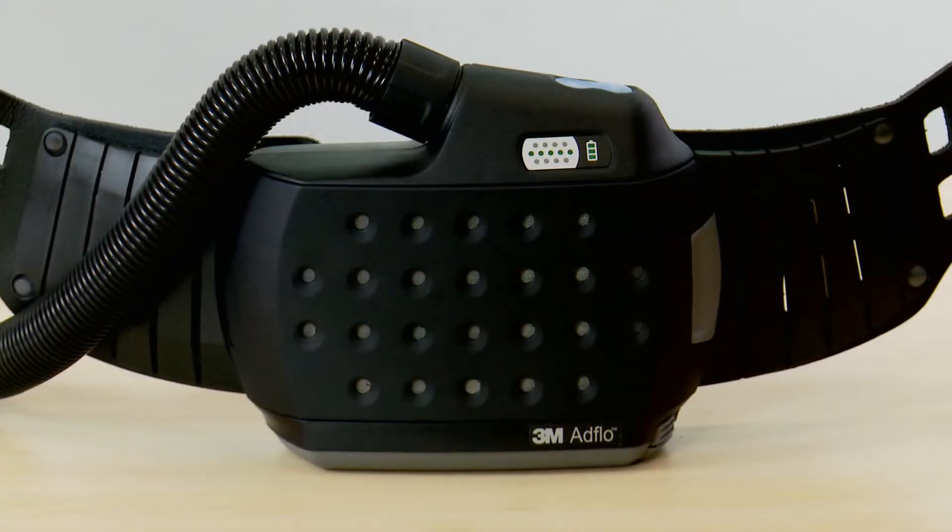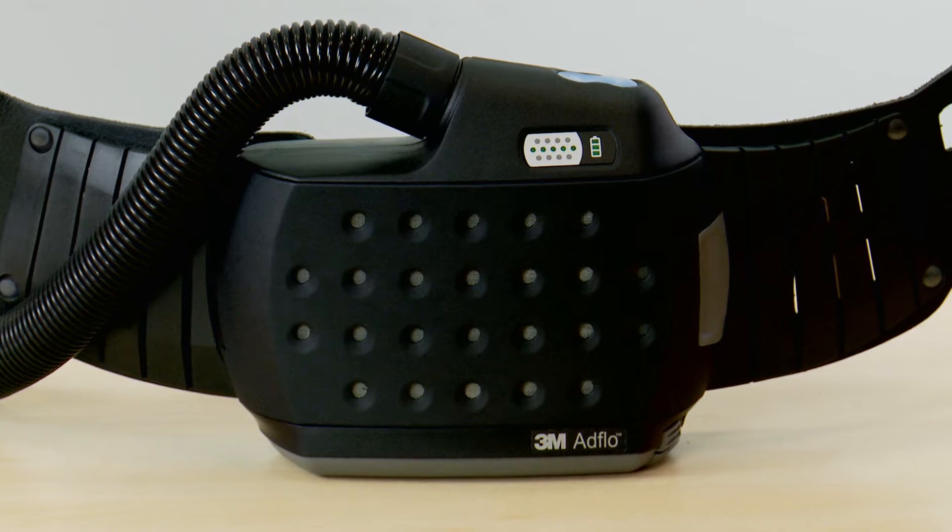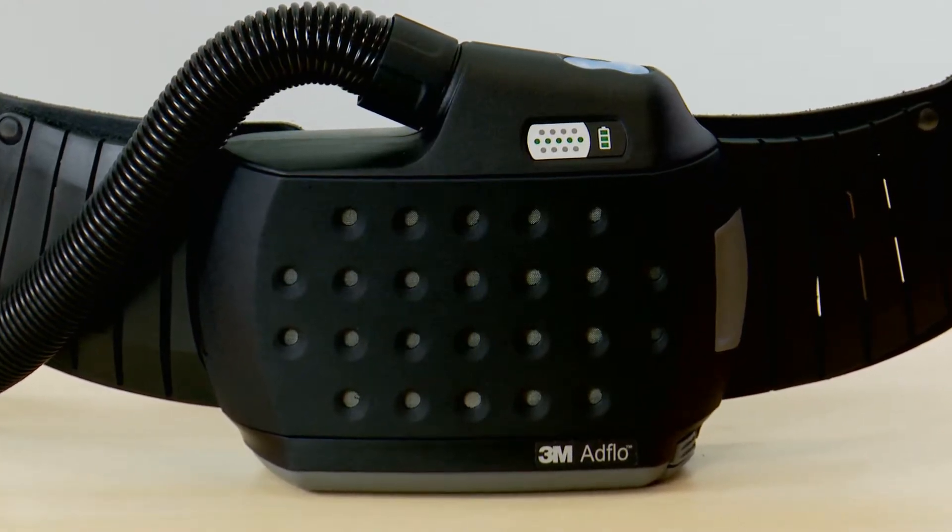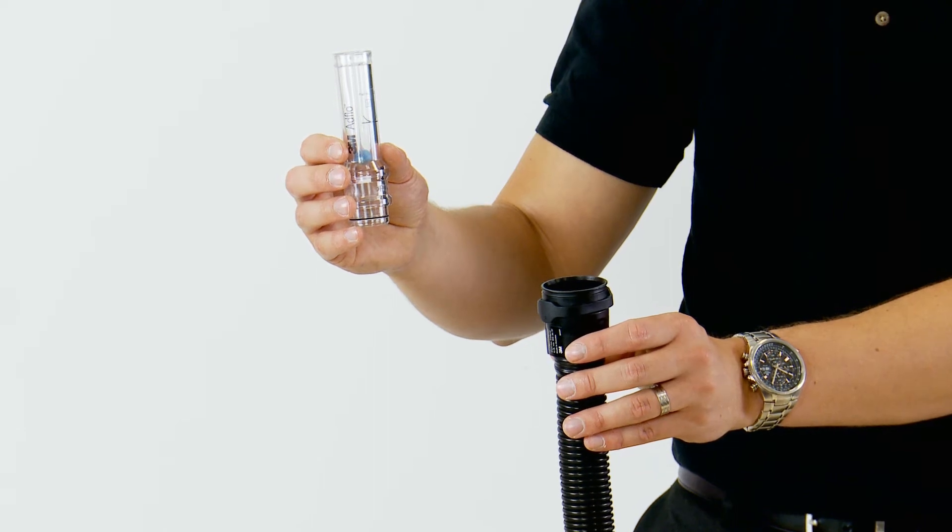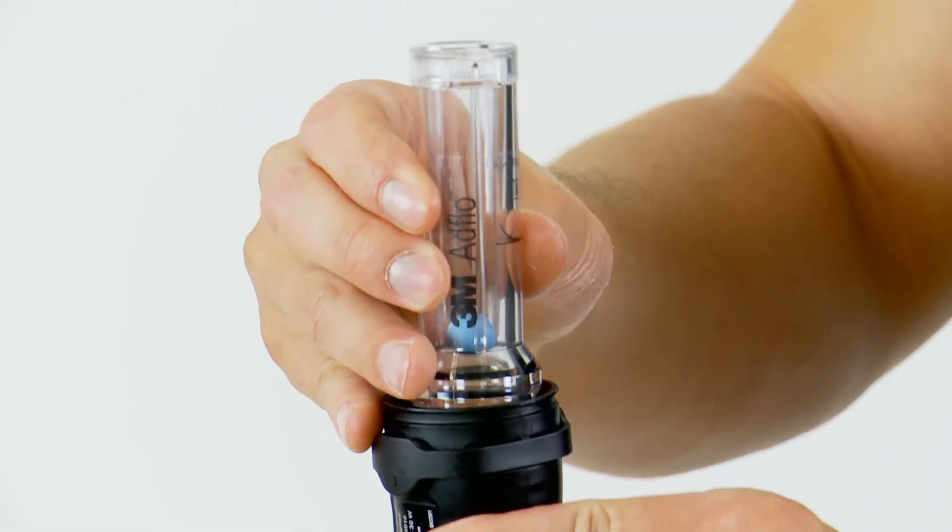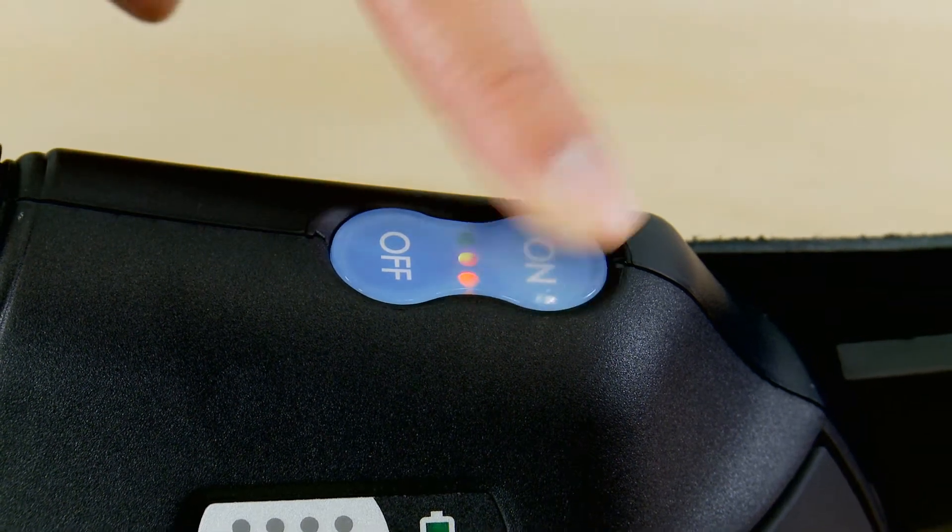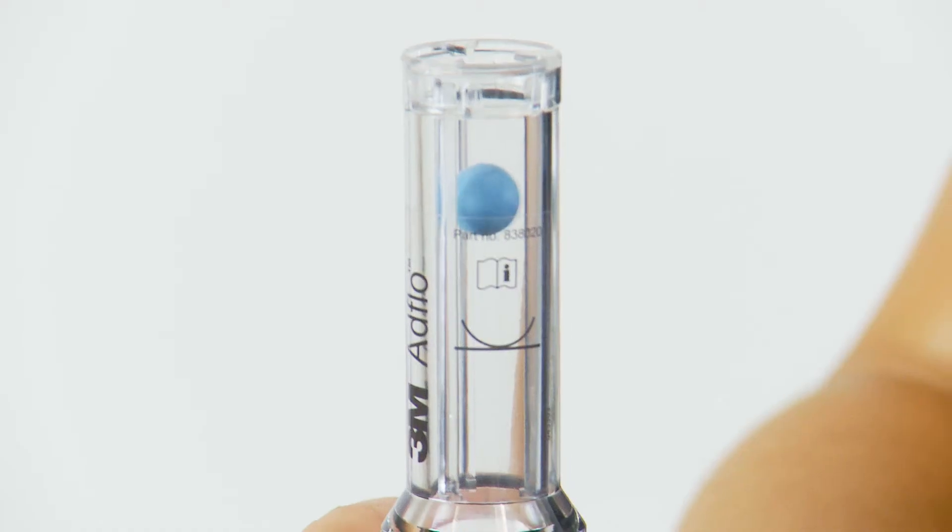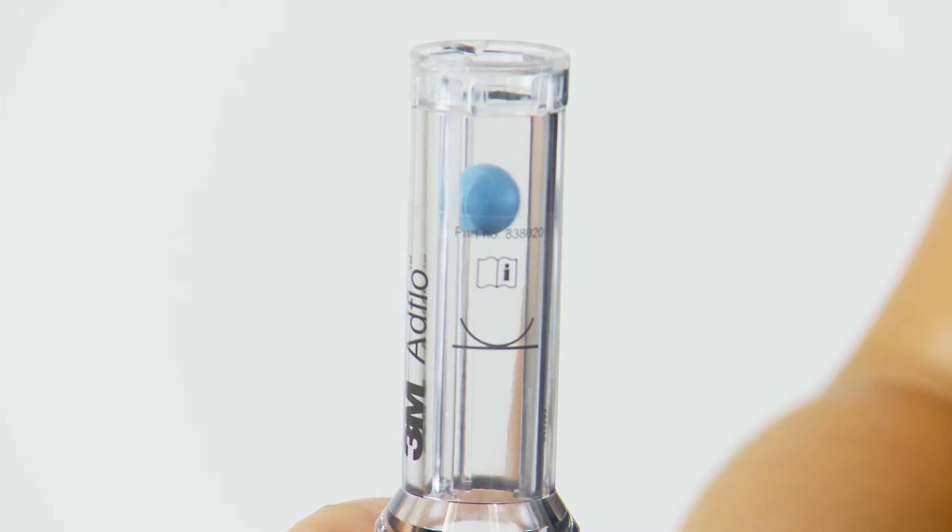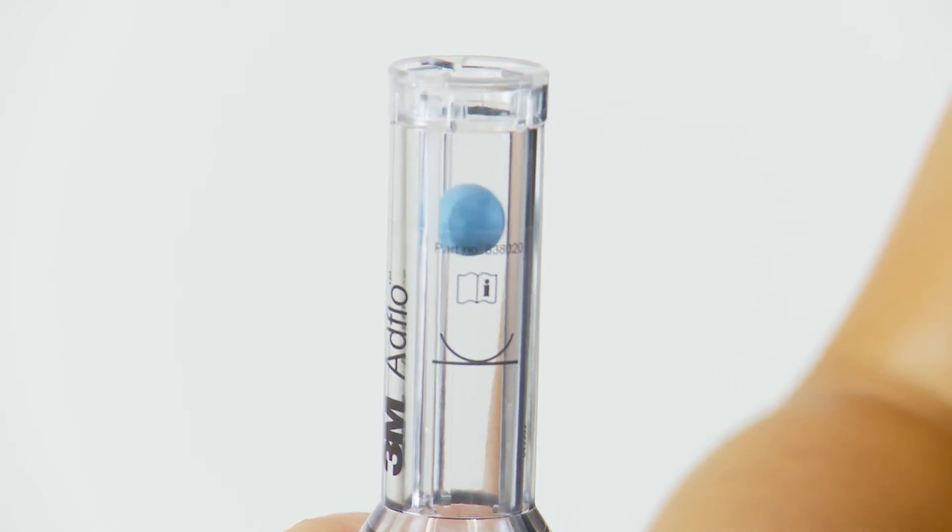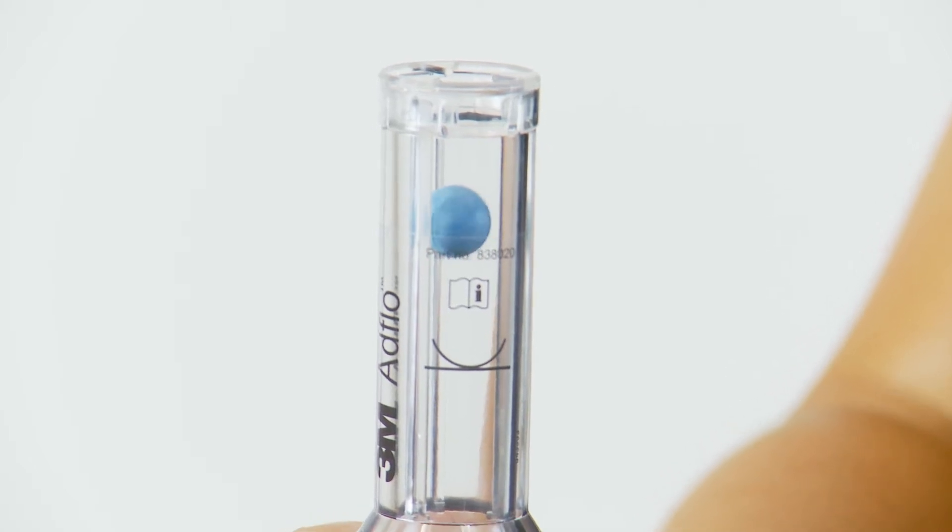It's really important to check that your AdFlo is in good working order every time you use it. Firstly, you need to check there is adequate airflow. The airflow indicator tube comes with the AdFlo and can be placed into the top of the breathing tube. Press the on button once to turn on the AdFlo. Make sure that the airflow is sufficient to raise the ball above the line on the indicator. Do not use the AdFlo if the minimum airflow is not met.